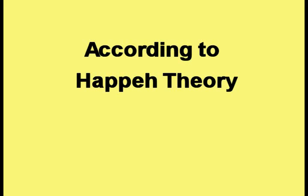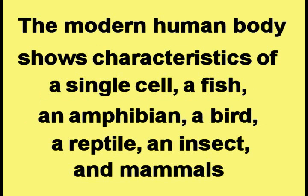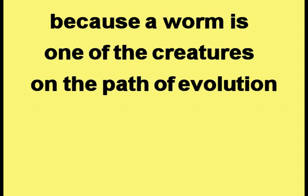According to Happy Theory, the modern human body retains characteristics of all of the creatures on the path of evolution. The modern human body shows characteristics of a single cell, a fish, an amphibian, a bird, a reptile, an insect, and mammals. That means the human body must also display the characteristics of a worm, because a worm is one of the creatures on the path of evolution.